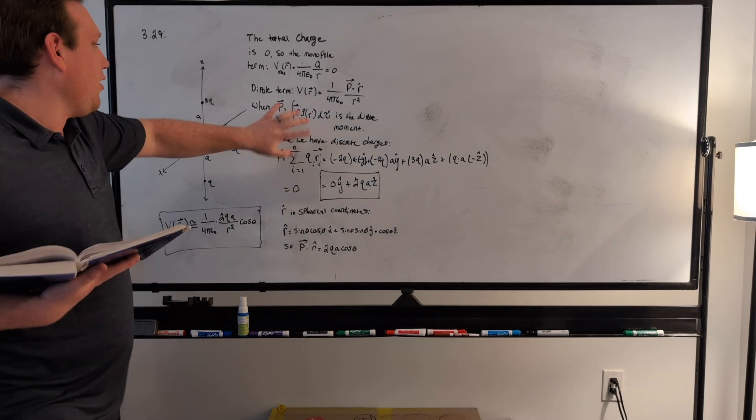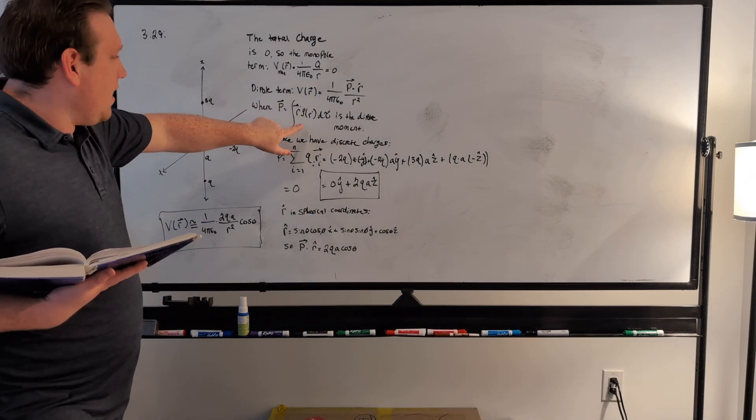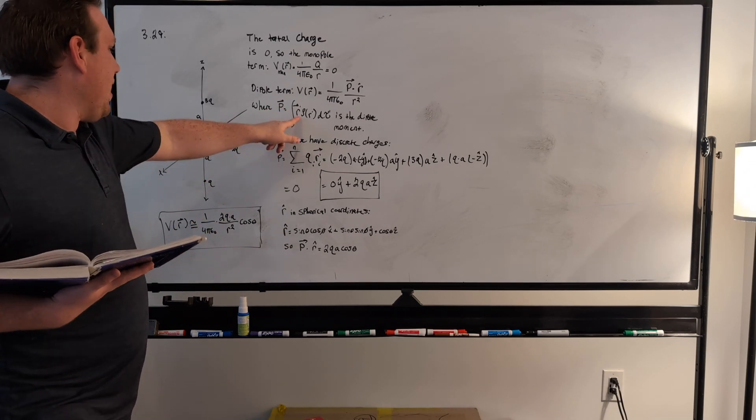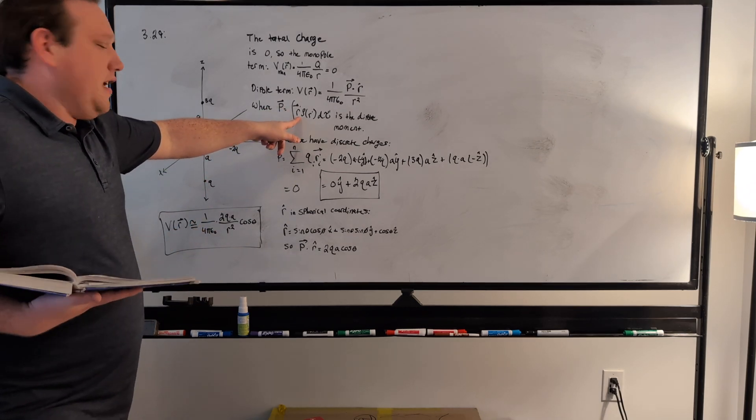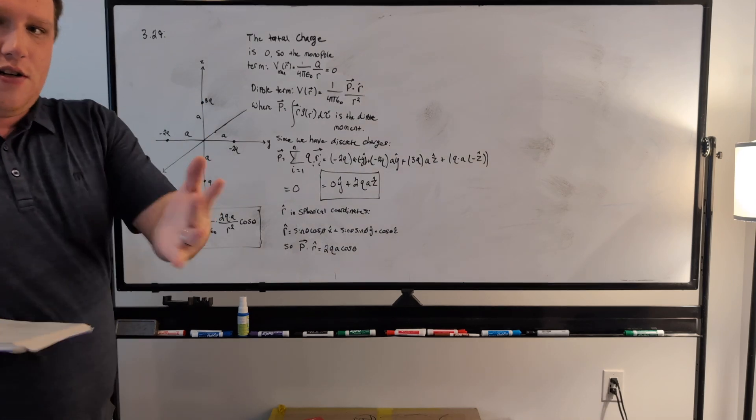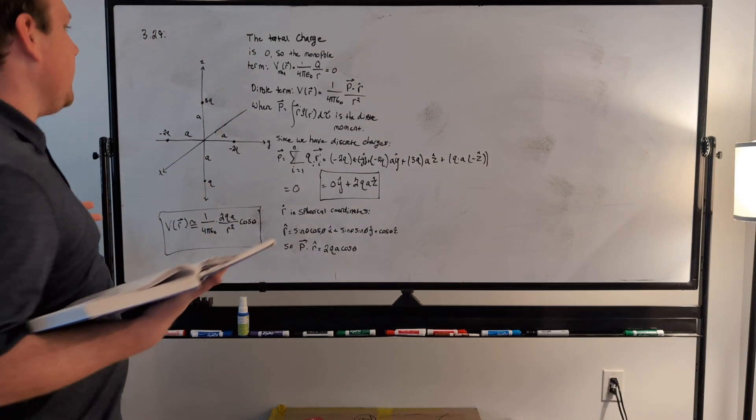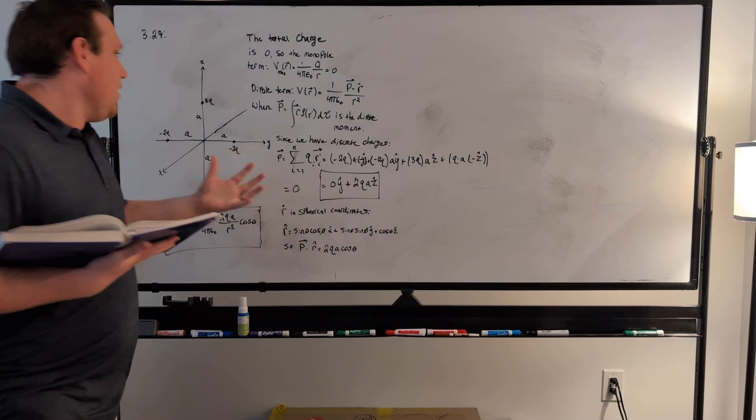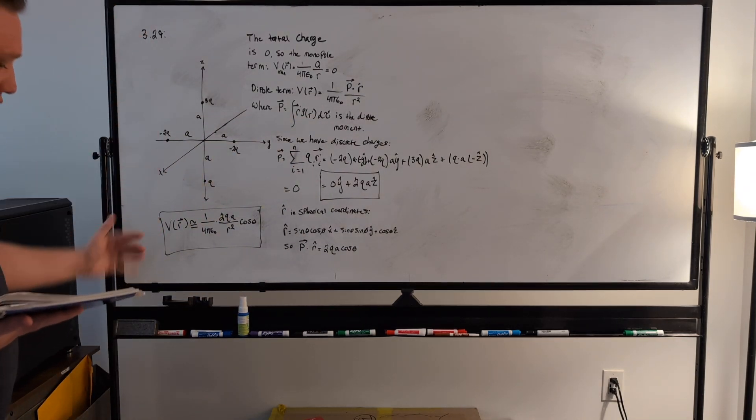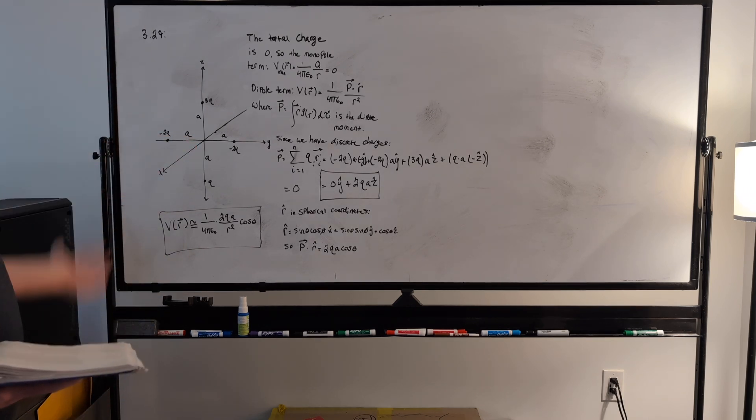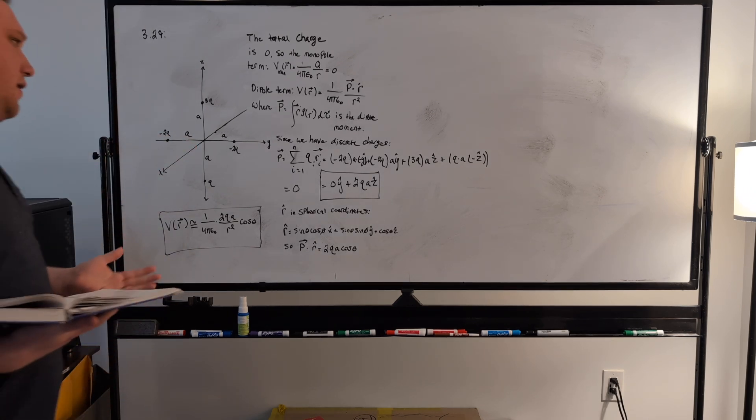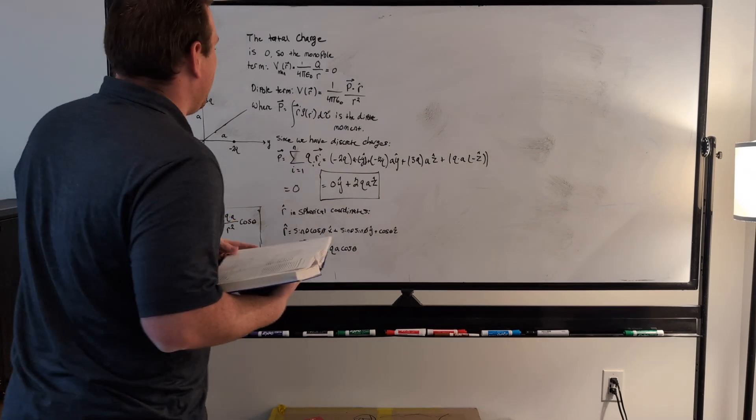And it's basically purely based on the geometry, because r-prime is the vector to the charges, so that depends on how the charges are configured, and the charge density and d tau, that's just based on also the configuration and the geometry of the object containing the charges, so the dipole moment is purely a geometrical quantity essentially.